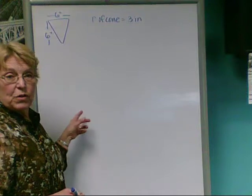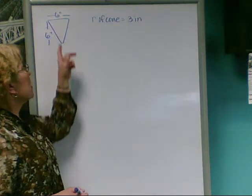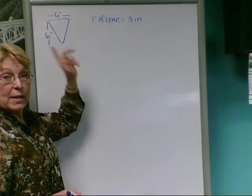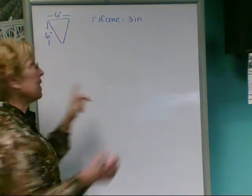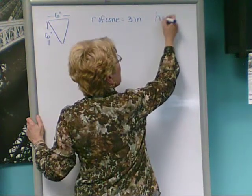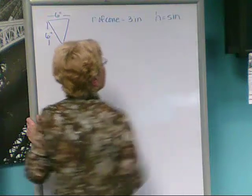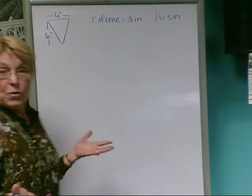Next, we're asked to find the change in height of the water level in the cone at a specific point in time, and that point is when the height is 5 inches high. So let's use what we know.